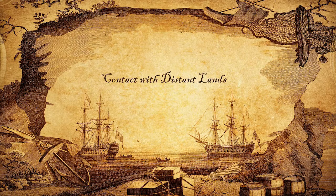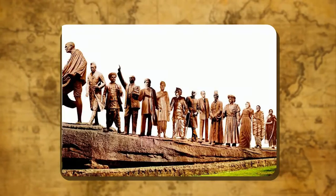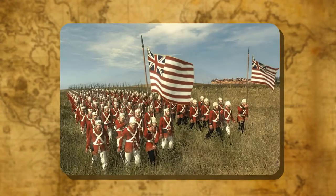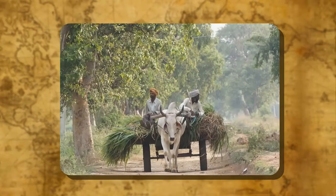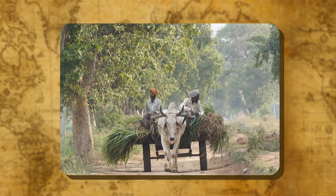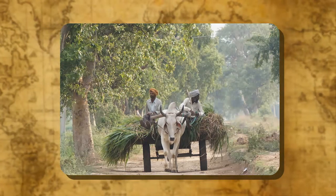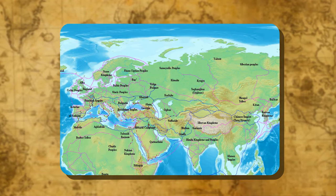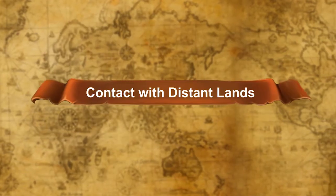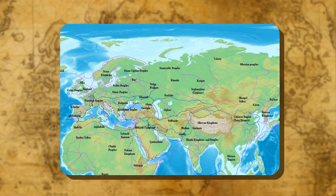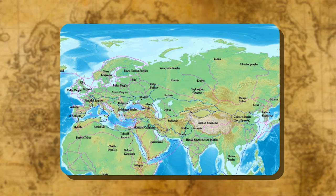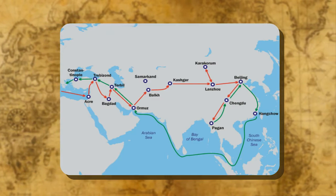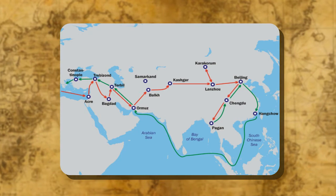Contact with distant lands: Indian history speaks of different communities that came to this land from outside. The means of transportation were not so advanced at that time, and they must have faced a lot of difficulties in reaching foreign shores. India has a long history of contact or interaction with distant lands, and this contact was established through different ways.